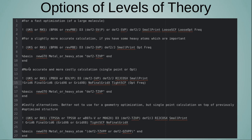For even more costly but accurate work, use hybrid functionals with appropriate grid settings. I typically use SVP on light atoms and TZVP on heavier atoms. For single-point calculations on an already optimized structure, I don't compute frequencies.